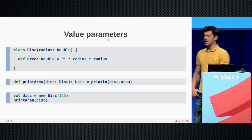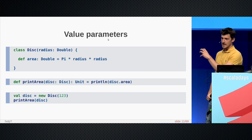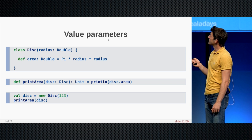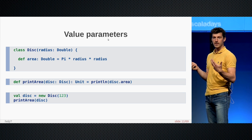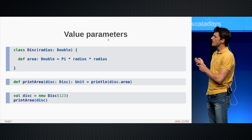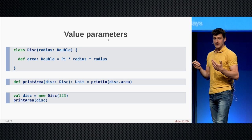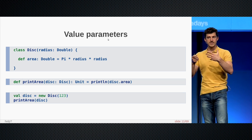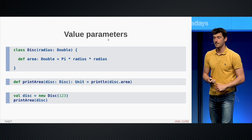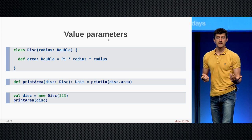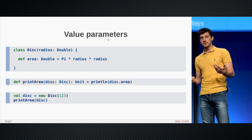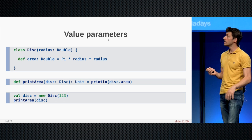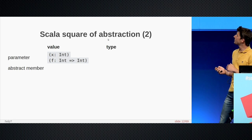I will present them as a square of abstractions. We will see how we can abstract over values and types in two different ways: using parameters or abstract members. Let's start with abstracting over values as parameters — that's the first cell. I define this disk abstraction, and the unknown part is the radius of the disk. I can still define the area of the disk based on this unknown part, because I've modeled it as a parameter of the constructor. When I use an instance of the disk, I don't care about its radius — only when I create a disk do I fill this unknown value with a concrete value.